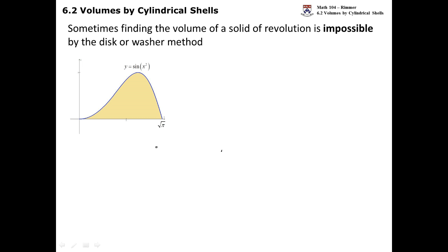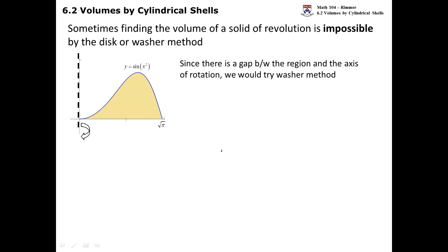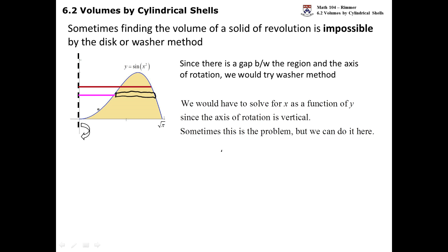Here's a function y equals the sine of x squared, and we're going to revolve this around the y-axis. There's a gap between your region and your axis, so you would think it would be washer. To do washer, you draw a typical rectangle that generates a typical washer and find the outer radius and the inner radius. But the problem is they both go to the same curve, y equals sine of x squared — so that's one problem.